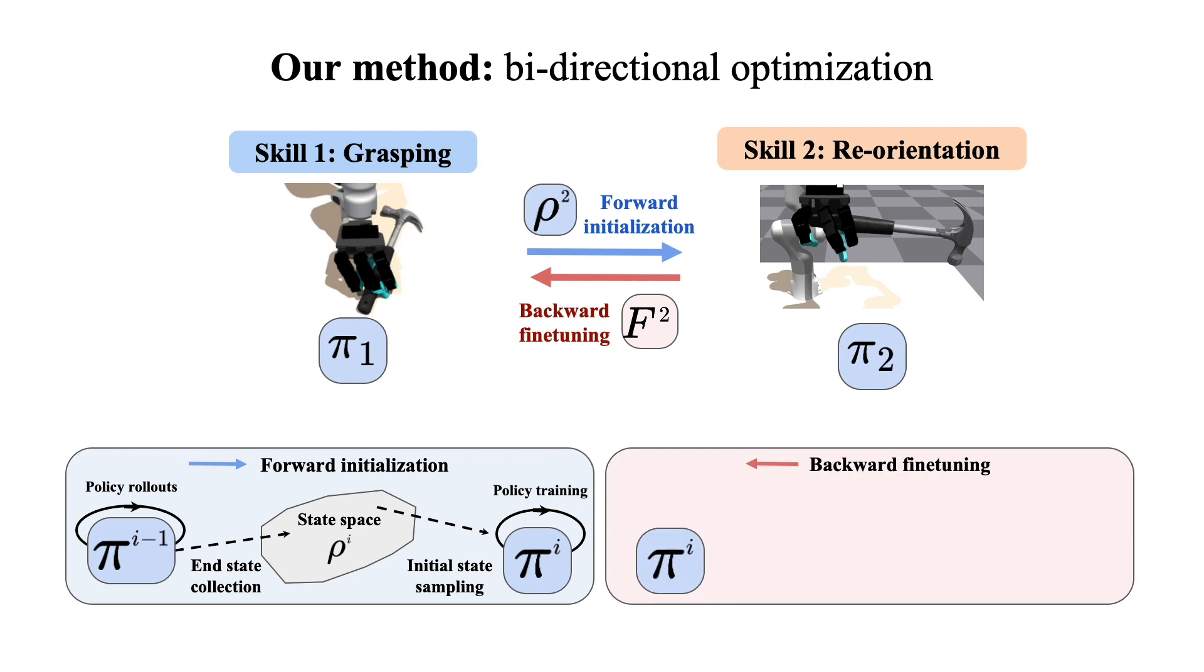After training each skill with forward initialization, we start the backward fine-tuning process. A transition feasibility function for each skill is trained with the rollout dataset which maps the initial state to the sum of rewards by the end of the skill execution. This function is then leveraged as an auxiliary reward for fine-tuning the preceding policy.